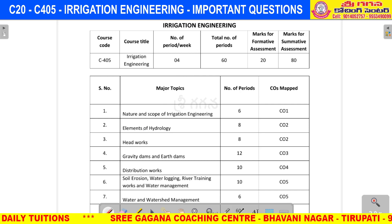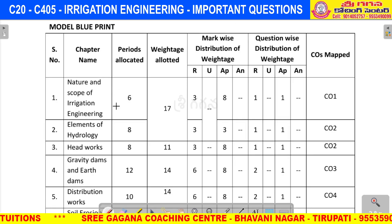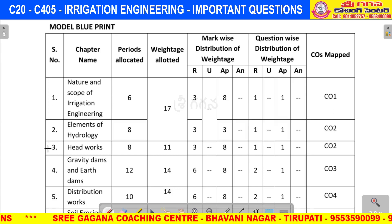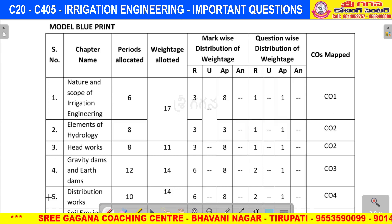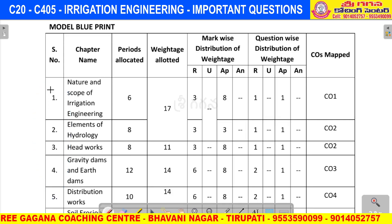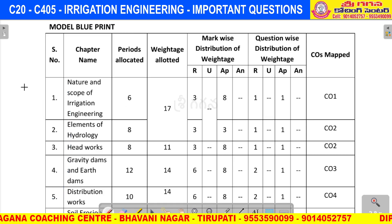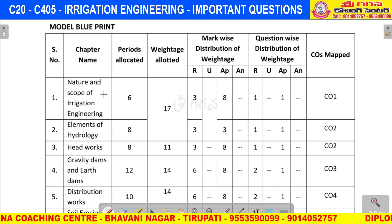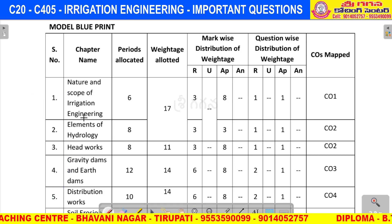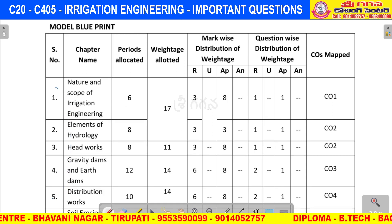So first, we have to choose the blueprint. From the first unit, we choose the first unit; from the second unit — the first unit is nature and scope of irrigation engineering, and the second is elements of hydrology.